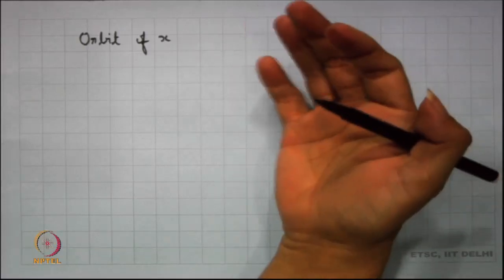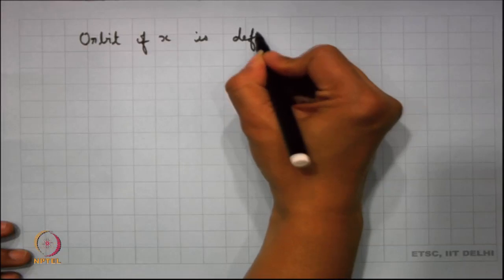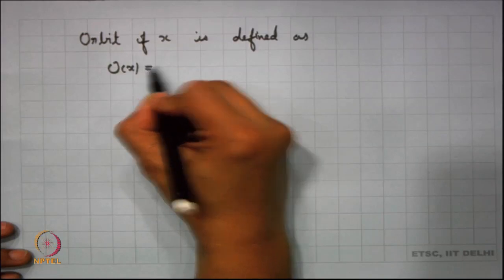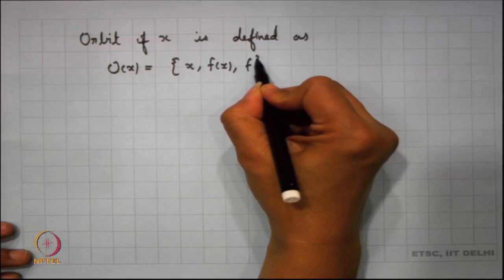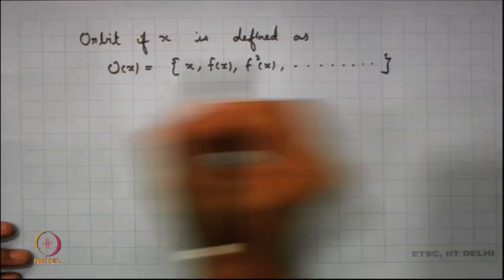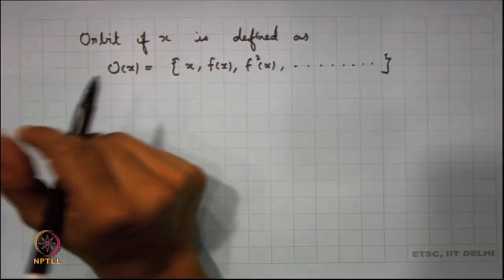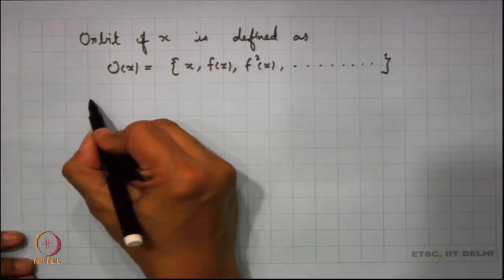So the orbit of x, one could say it is the trajectory of x. So the orbit of x is defined as, we denote it as O(x), and this happens to be the sequence x, f(x), f²(x), and so on. What we are basically interested in studying here is the asymptotic properties of O(x) for all x. So we study the asymptotic property.